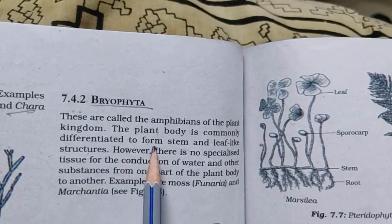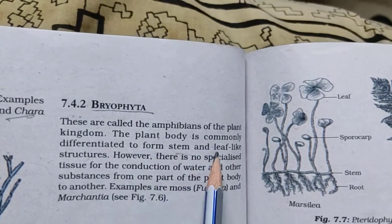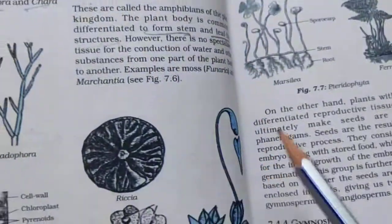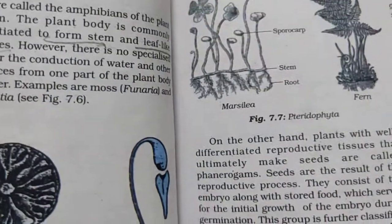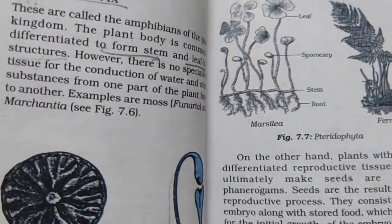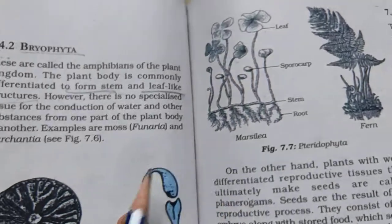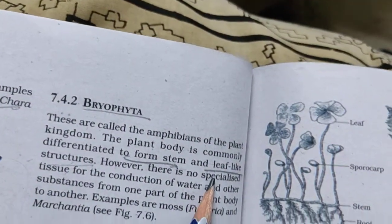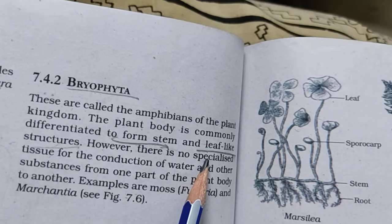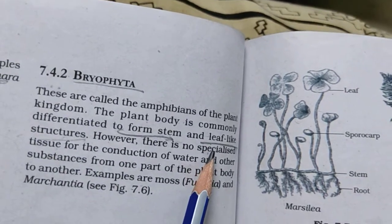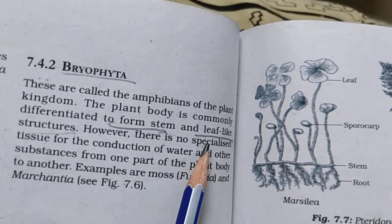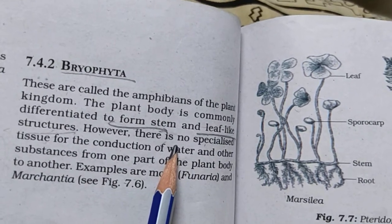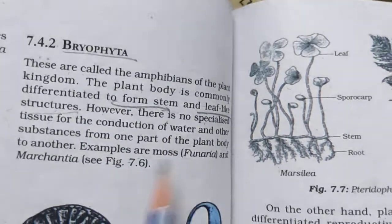The plant body in Bryophyta is commonly differentiated to form stem-like and leaf-like structures. So you will see a stem and leaf-like structures. However, there is no specialised vascular tissue - no xylem or phloem - to transport water and other substances.